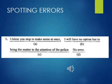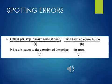Question 1: Unless you stop to make noise at once, A, I will have no option but to, B, bring the matter to the attention of the police, C, no error, D. The first part which is underlined is represented by A, second part by B and third part by C. You have to find out whether there is an error. And if there is no error, the last option D is the right option.